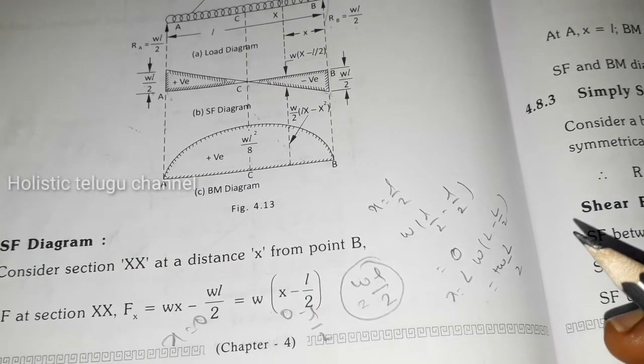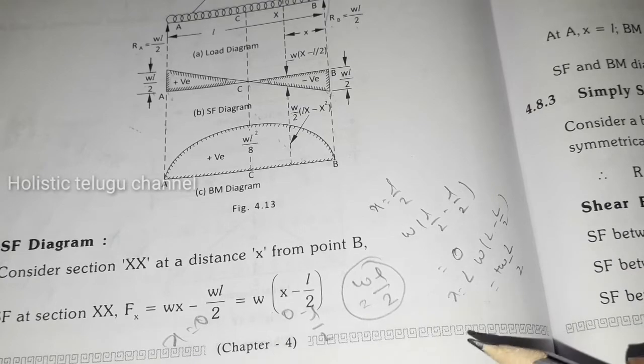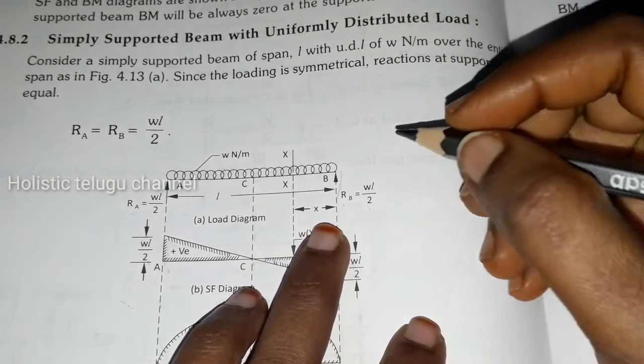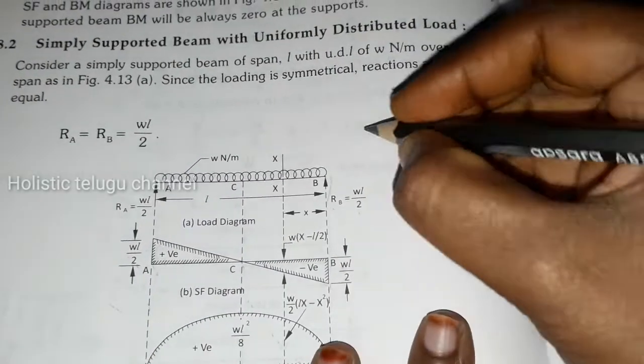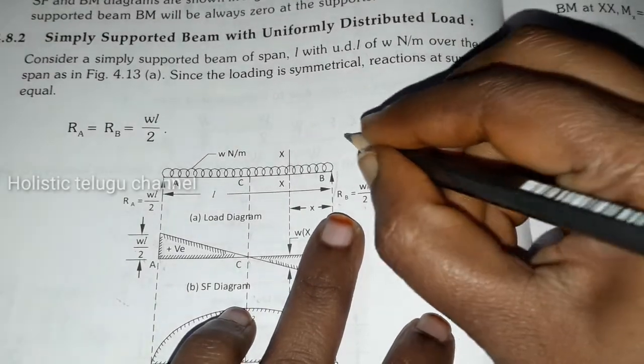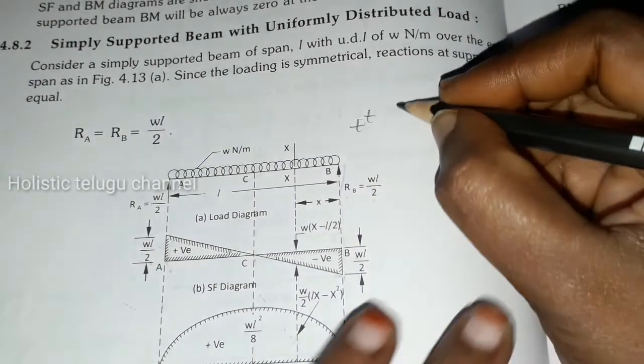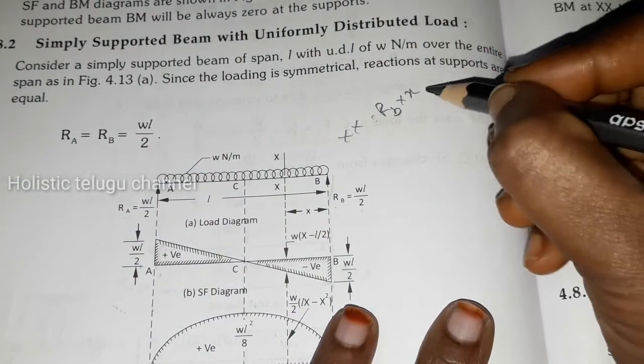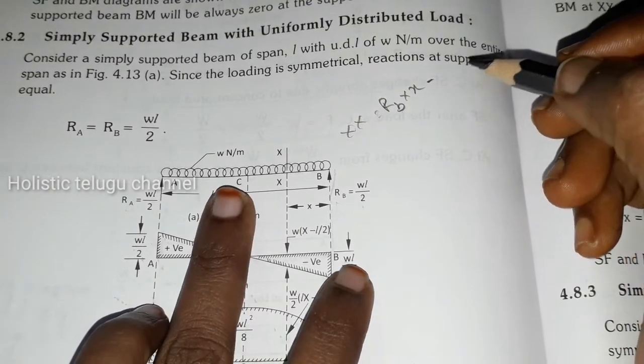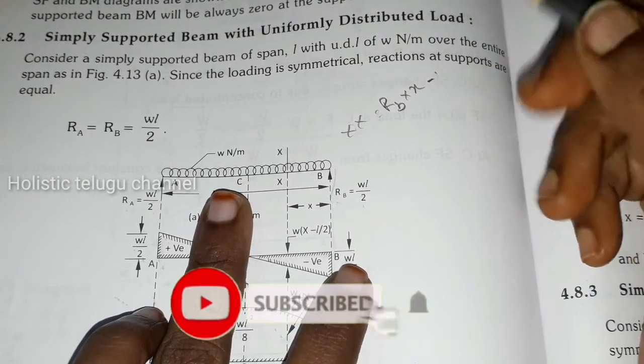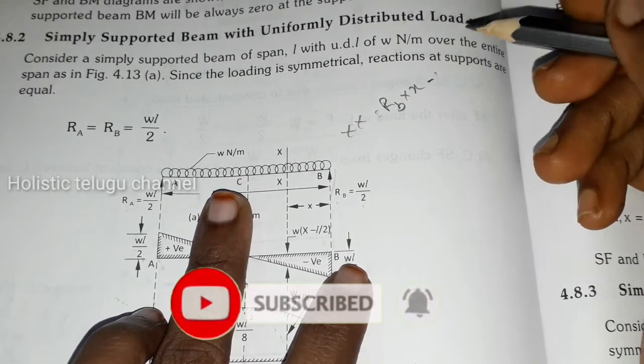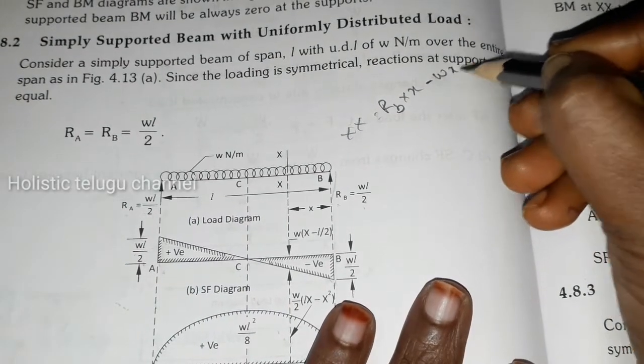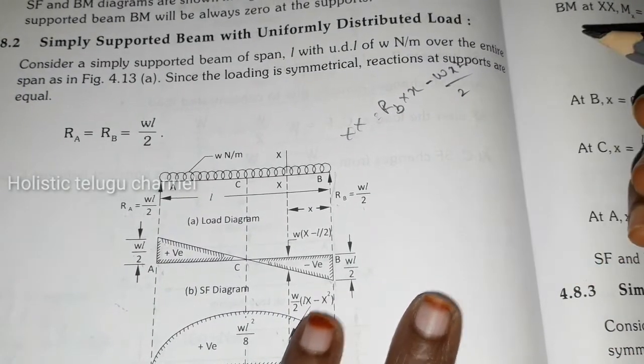Now we need to find the bending moment. So bending moment at XX, how to find it? Bending moment at XX is R_B into X minus - it is UDL, so the formula is WL² by 2, so here it is W X² by 2.